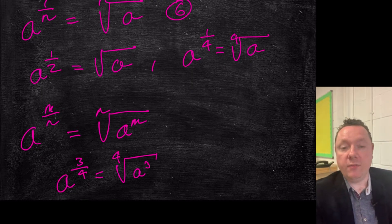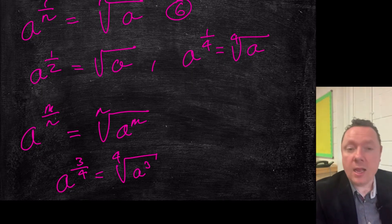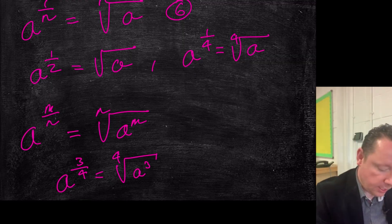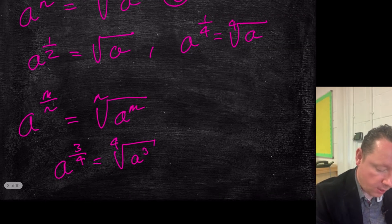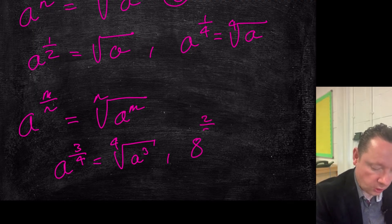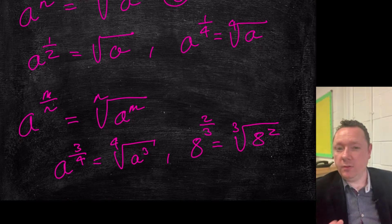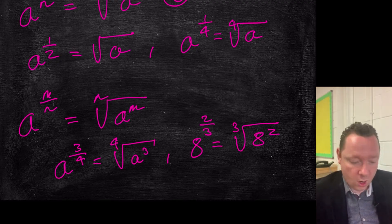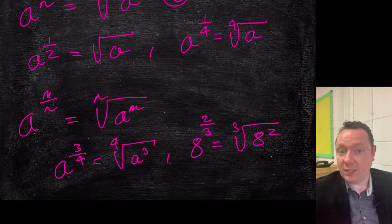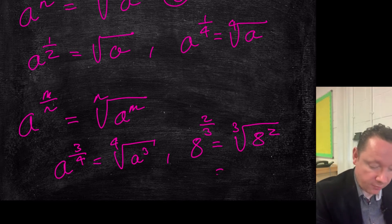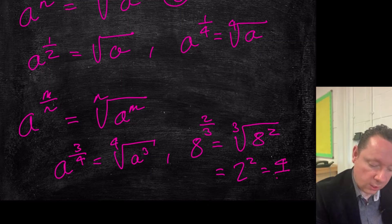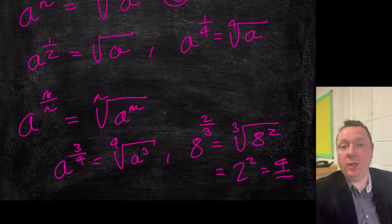Often in National 5, we're asked to evaluate a number to a fractional power. Let's take a simple example: eight to the power of two thirds. Well, that means the cube root of eight squared. There are two ways to do this — you can either square eight first to get 64 and then cube root it, or you can cube root eight first and then square the answer. The cube root of eight is two, so that's just two squared, which is four.